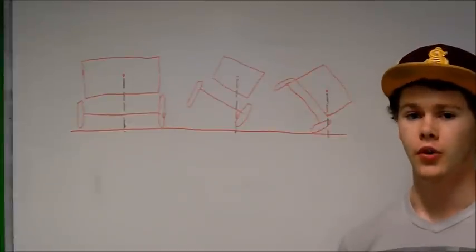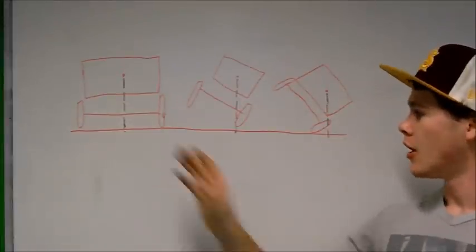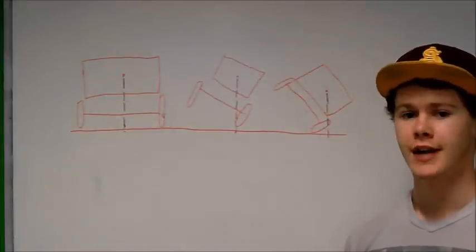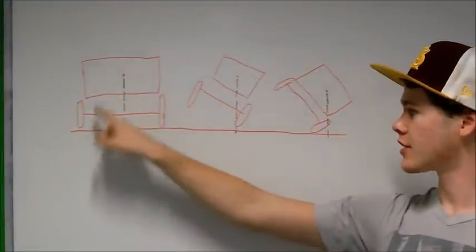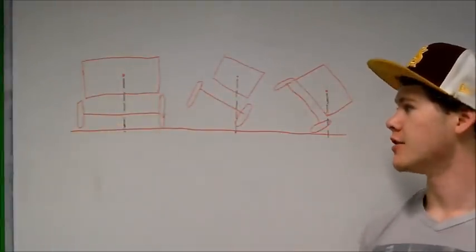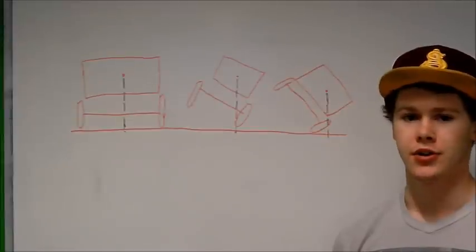To demonstrate how a rollover works, I've drawn three pictures here. Our first one represents a vehicle on flat ground. Here's the body of the vehicle, here's our axle, our tires, and this little red dot in the middle is our center of gravity.